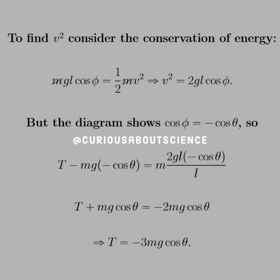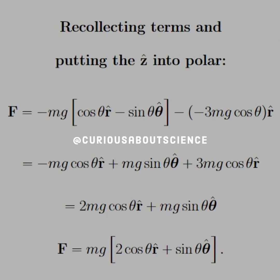The diagram shows that cosine of phi is actually equal to negative cosine theta. So plugging these into the force equation, we get T minus Mg negative cosine theta equals M 2GL negative cosine theta over L. Simplify that down, and we get an expression for tension. Now that we have the tension, we need to substitute that back into the force equation from the free body diagram.